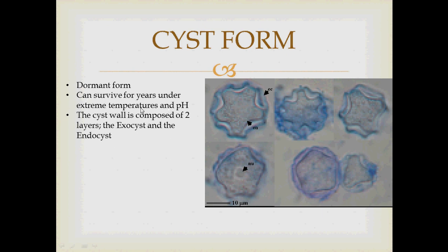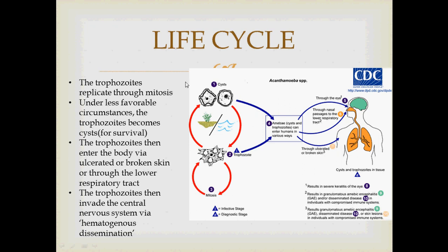The cyst form is the dormant form and can survive for years under extreme temperatures and pH. The cyst wall is composed of two layers: the exocyst and the endocyst.